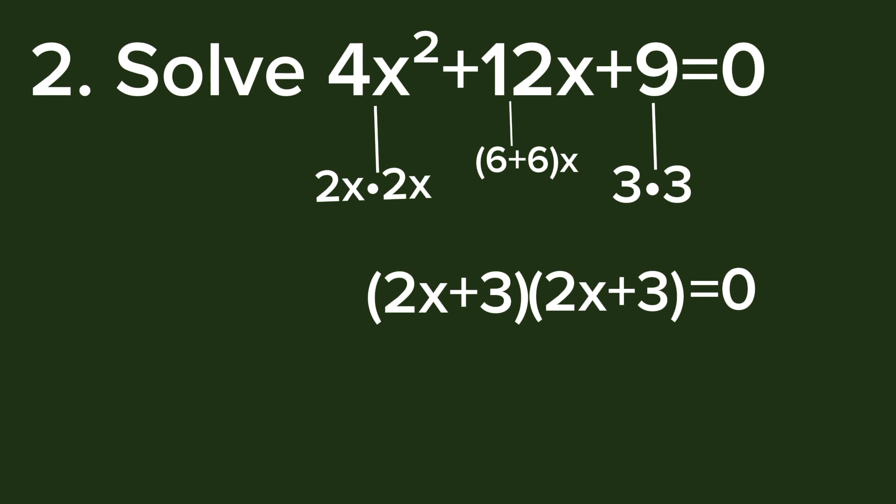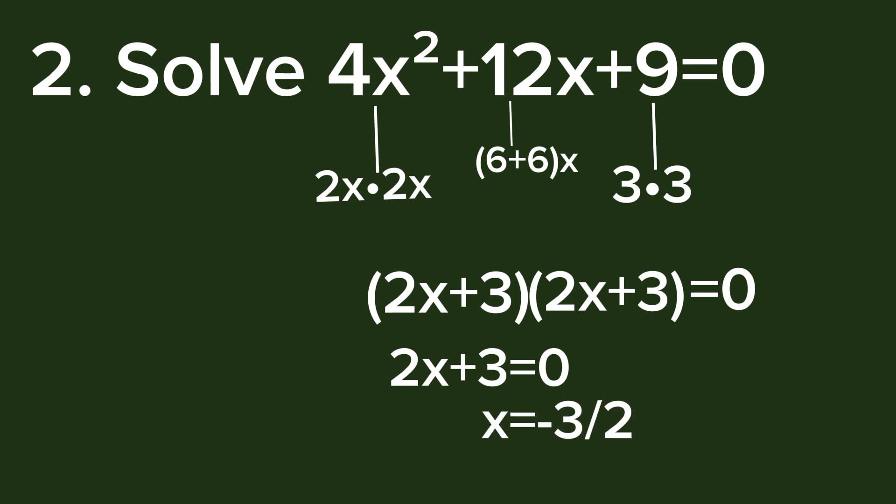By the zero product property, 2x + 3 = 0, and solving for x we get x = -3/2.